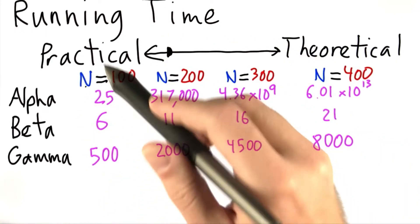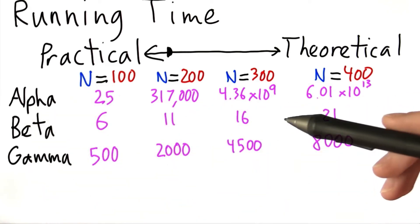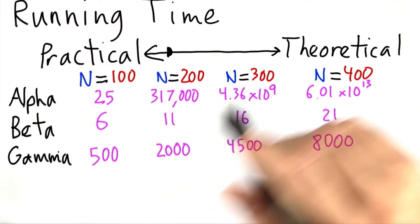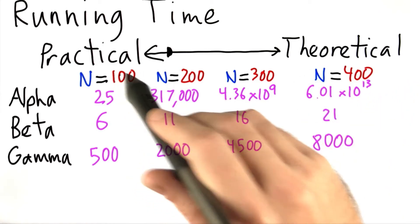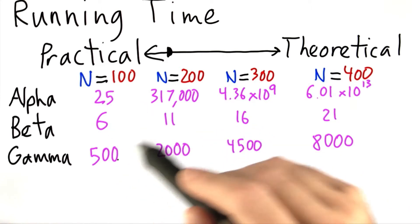So let's take a look at the three algorithms, call them alpha, beta, and gamma in this table. And we're running them on different input sizes, an input size of 100, 200, 300, and 400. And we're showing their running times.